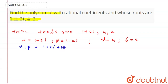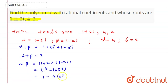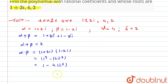Now we know the sum of roots: alpha plus beta equals 1 plus 2 iota plus 1 minus 2 iota, which equals 2, since the imaginary parts cancel. Similarly, the product alpha times beta equals (1 plus 2 iota)(1 minus 2 iota), which is 1 squared minus (2 iota) squared, giving 1 minus 4 times (minus 1), so alpha times beta equals 5.